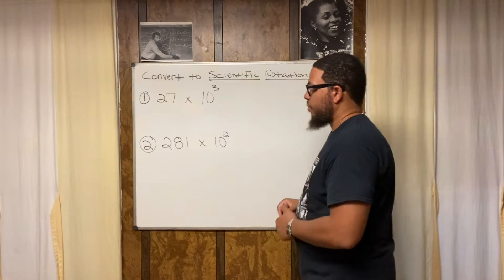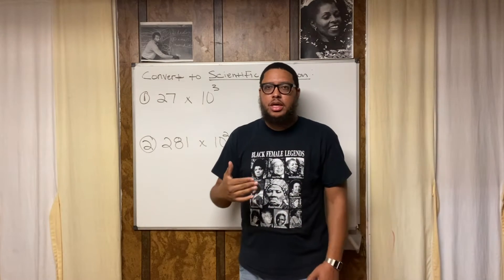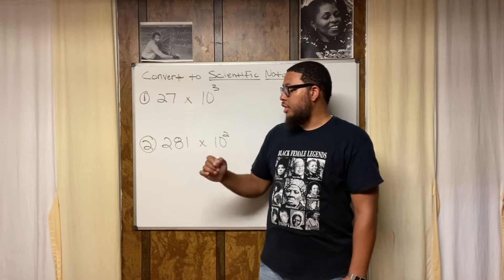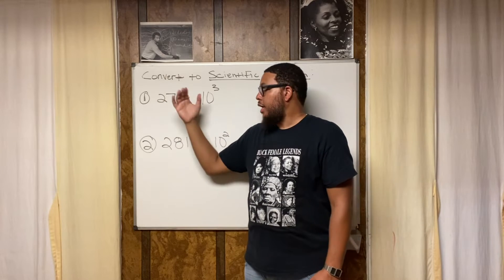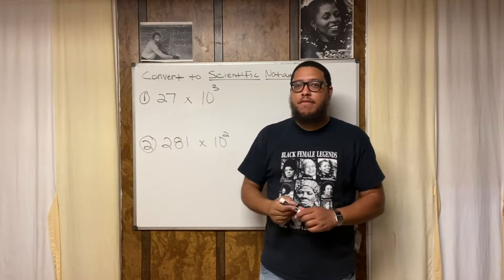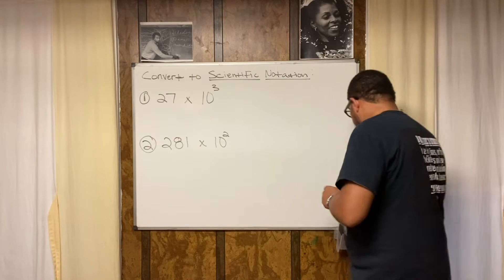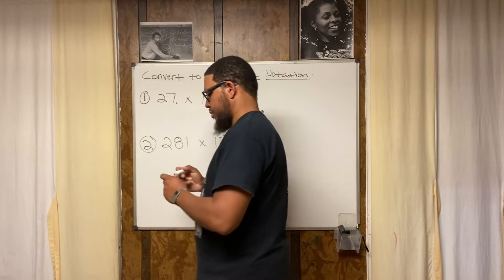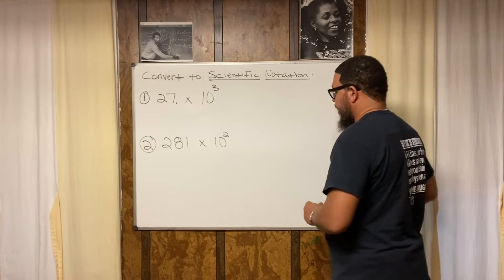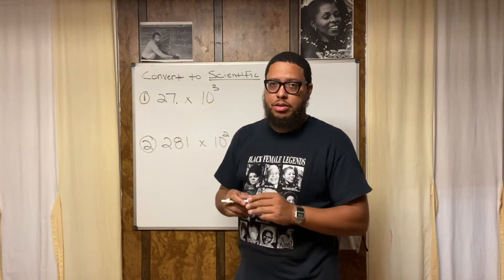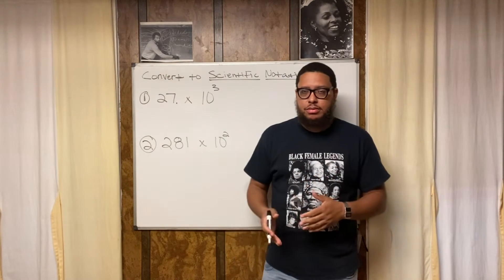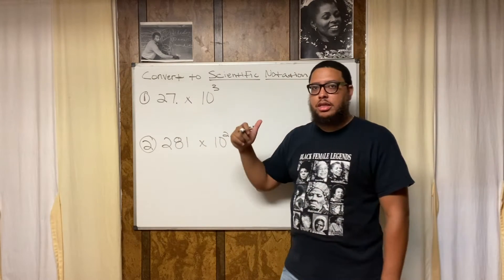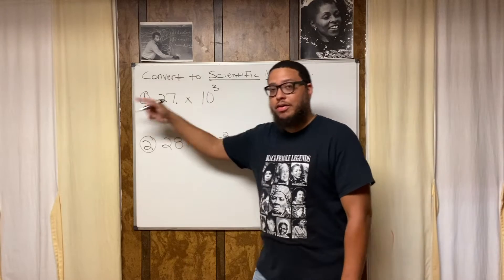So what's our process for doing that? Our process for putting any number in scientific notation is you first think about where the decimal point is, because it's all about the decimal point. There's no decimal point written, and this is a whole number, so that means there's an invisible decimal point after the 7. Now after that, you've got to create a number that's between 1 and 10 by sliding the decimal point either to the left or to the right.